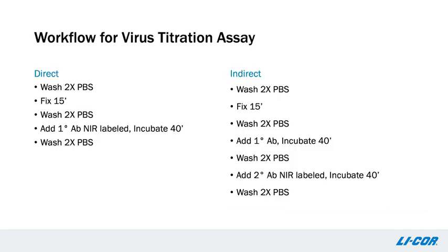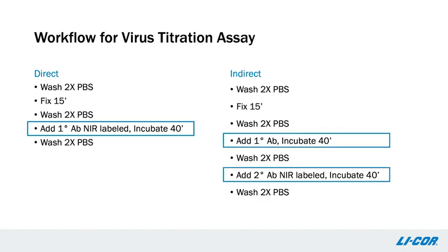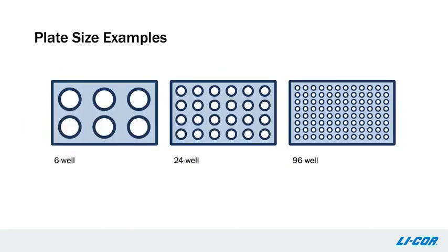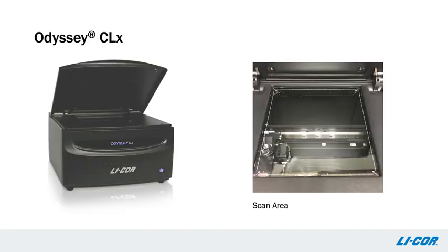Let's take a look at the application in detail. The workflow is straightforward and can be altered to suit your particular requirements. The direct labeling approach requires a primary antibody, while the indirect approach utilizes an unlabeled primary antibody coupled with a labeled secondary antibody. The assay can be performed in a variety of formats suitable to the virus under study. Higher throughput can be achieved by taking advantage of the multi-well reading capability of the large scan bed of the Odyssey CLX.